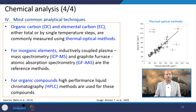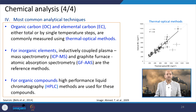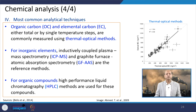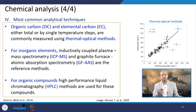Different analytical techniques are used depending on the species: organic carbon and elemental carbon are commonly measured using thermal optical methods; inorganic elements are analyzed using ICP-MS (Inductively Coupled Plasma Mass Spectrometry) or GF-AAS (Graphite Furnace Atomic Absorption Spectrometry); and organic compounds are analyzed using HPLC (High Performance Liquid Chromatography). Using the appropriate technique for each species is essential to obtaining correct results.